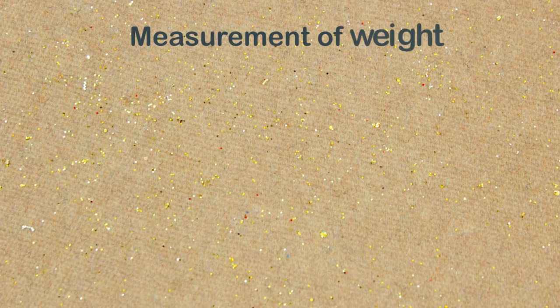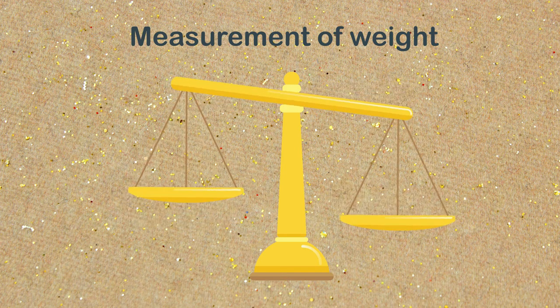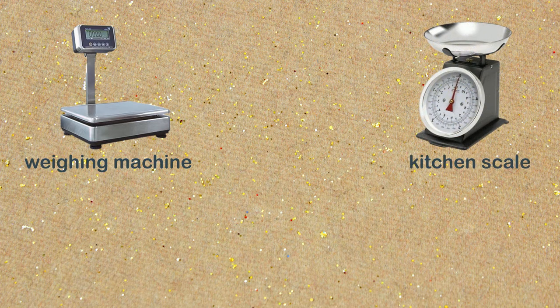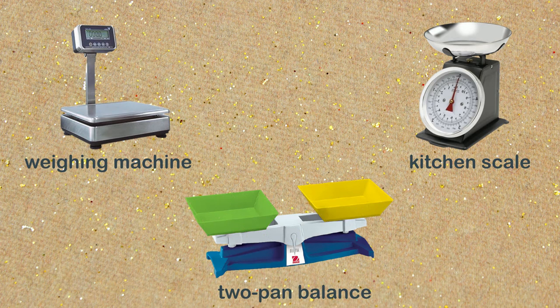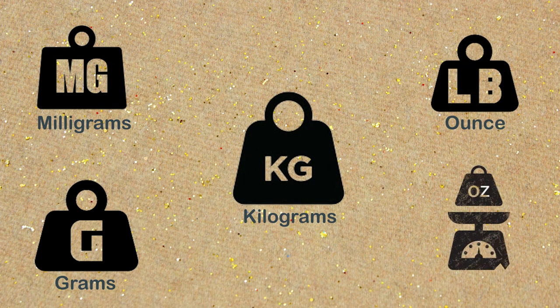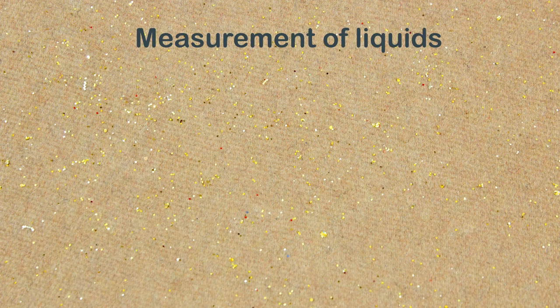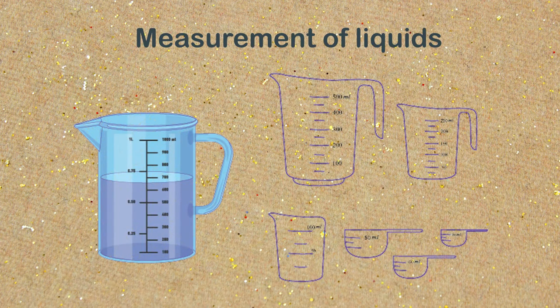Measurement of weight: we can measure the weight of objects to tell how heavy they are using different machines such as a weighing machine, kitchen scale, and two-pan balance. The weight is mostly measured in milligrams, grams, kilograms, ounce, and pound. Have you ever measured your weight on a weighing scale?